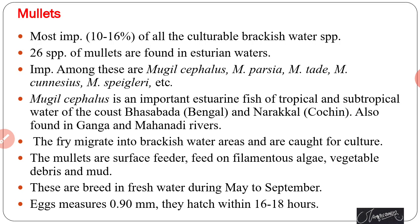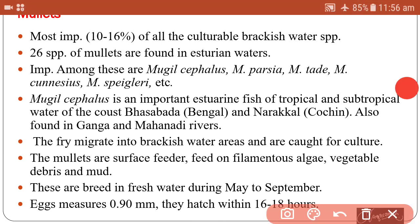The second fish species belonging to brackish water is the mullet. Mullet fish is also among the most important of all cultured brackish water species. Twenty-six species of mullets are found in Indian waters, including important species such as Mugil cephalus, Mugil pacia, Mugil tade, Mugil canaceus, and Mugil speigleri.